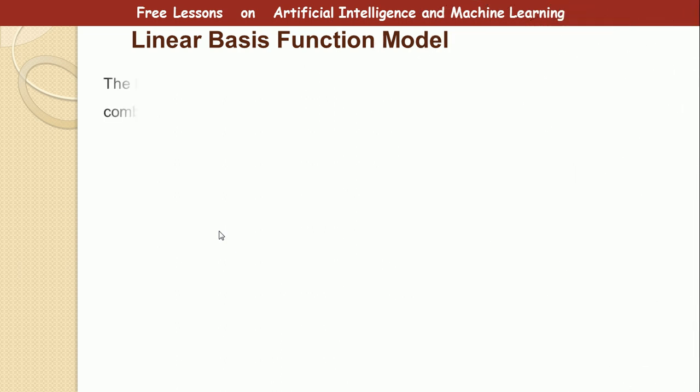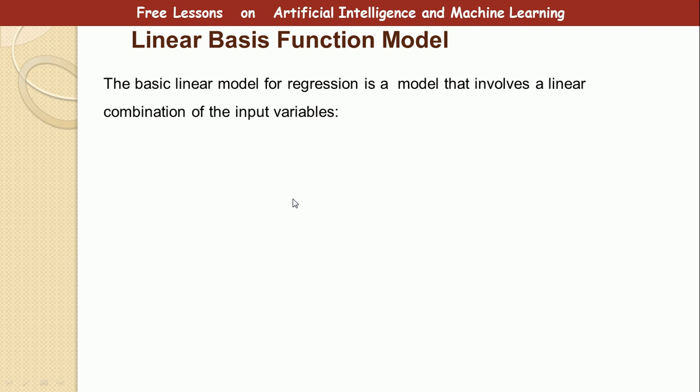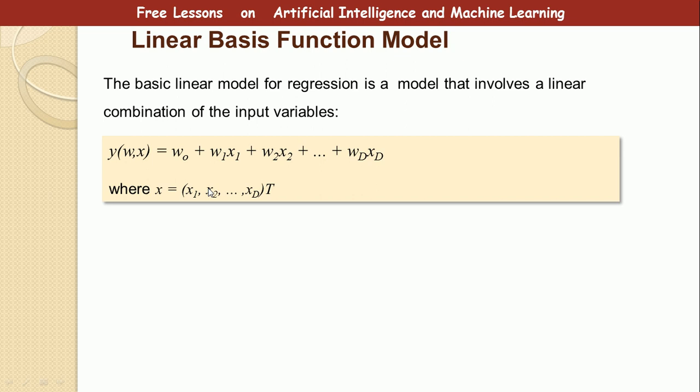Okay, so let's now talk about the linear basis function model. Now, the basic linear model for regression is a model that involves a linear combination of the input variables. So if you want to derive this function, this function is simply a combination of the input variables. The input variables, you have x, but you also have this coefficient, which is w. So you simply sum them all up together and that gives you the function you are looking for. So if you are given x1, x2, x3 for the whole set of input variables in the vector, you simply sum them up, multiplying correspondingly with w, and then that gives you the result.